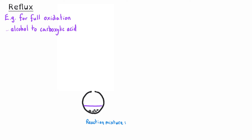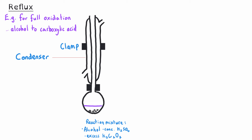We carry out the process of refluxing for a variety of different organic syntheses. For instance, we might want to do a full oxidation of an alcohol to produce a carboxylic acid. When we do this, we have our reaction mixture in a round-bottomed or pear-shaped flask. The reaction mixture would be the alcohol being oxidized, concentrated sulfuric acid as a catalyst, and an excess of our oxidizing agent, probably potassium dichromate. Then we would connect a condenser to our reaction flask.